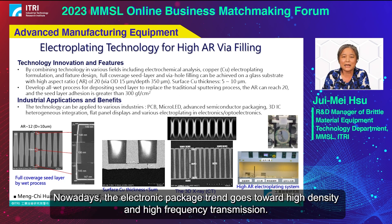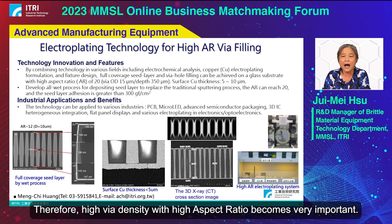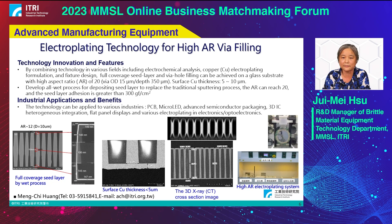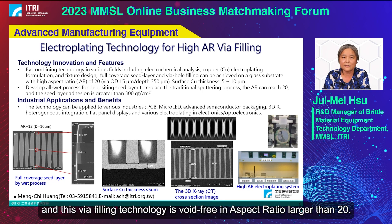Nowadays, the electronic packaging trend goes toward high density and high frequency transmission. Therefore, high via density with high aspect ratio becomes very important. Here, we develop copper electroplating technology for high aspect ratio vias. This via filling technology is void-free in aspect ratios larger than 20.